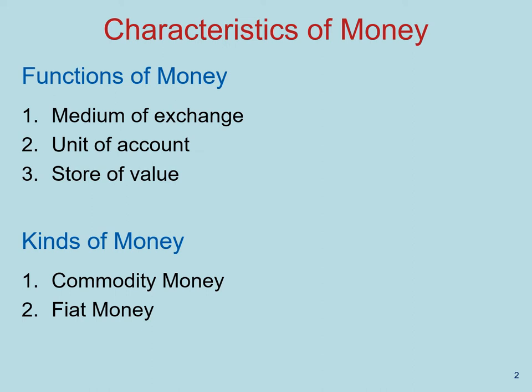An example of the opposite is manna, the food that the Israelites ate in the desert. It's the opposite of a good store of value because it goes bad overnight, so it couldn't transfer purchasing power to the next day.